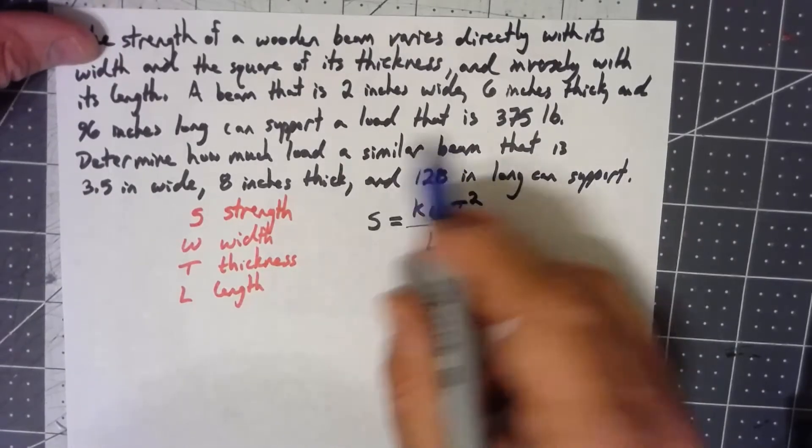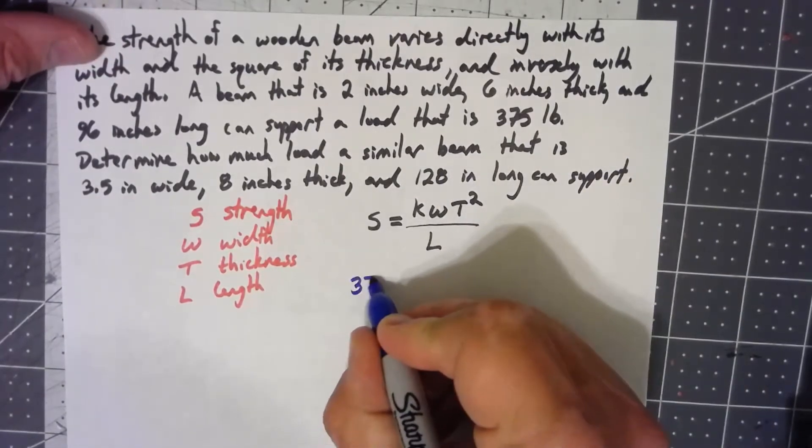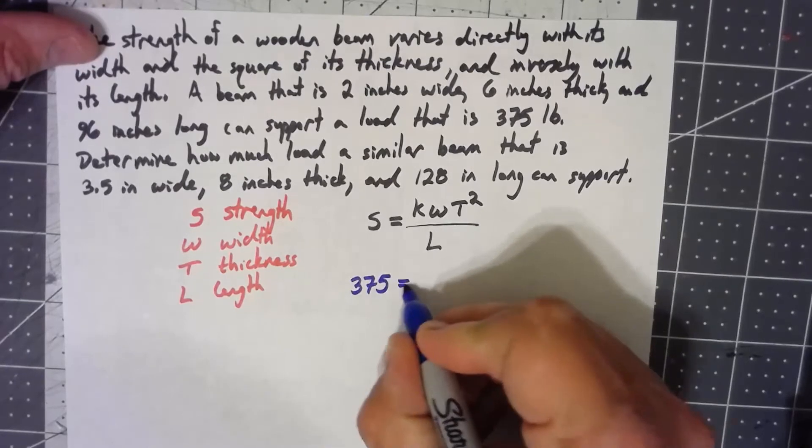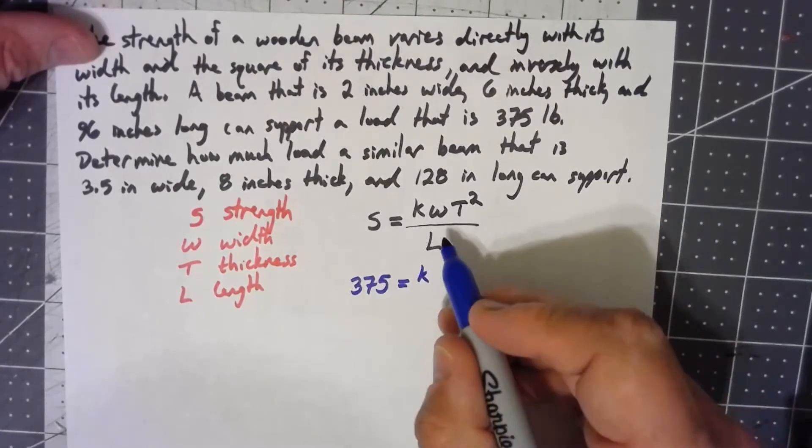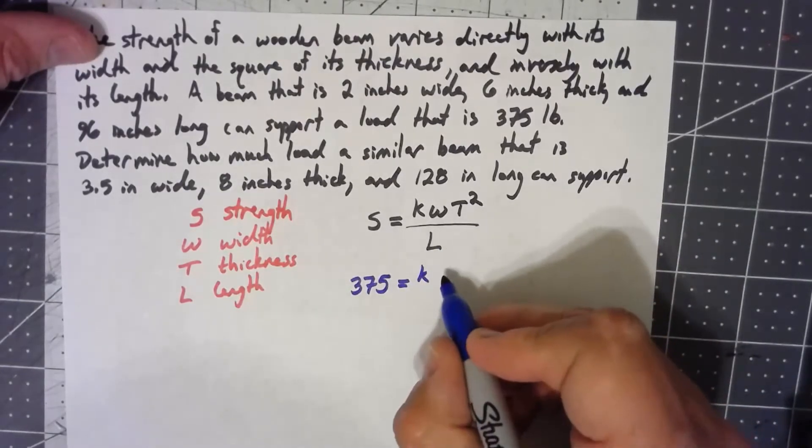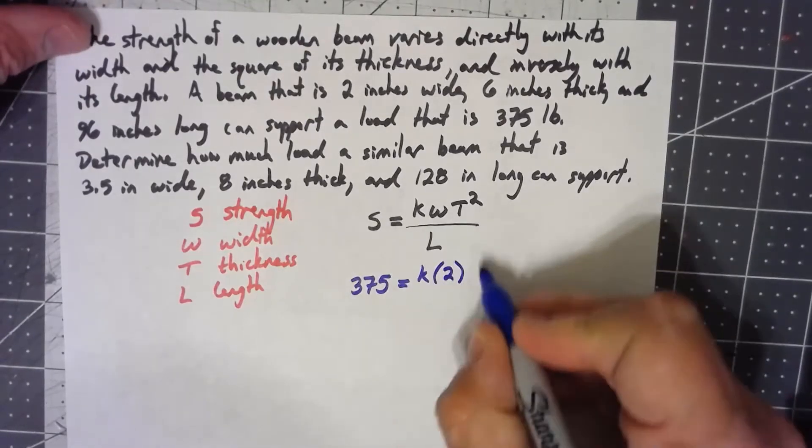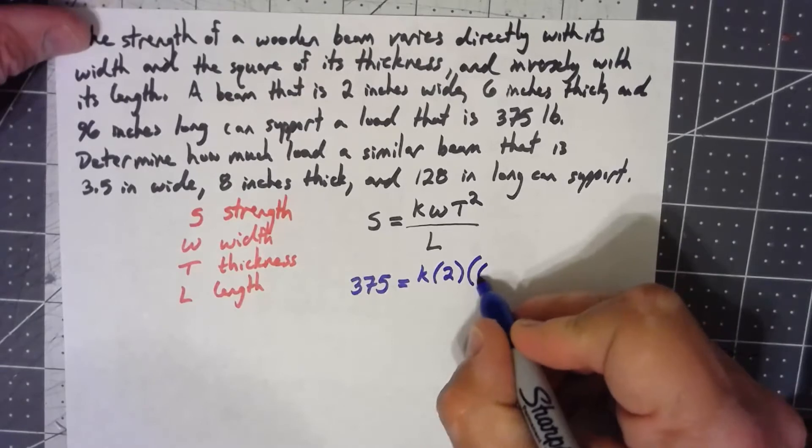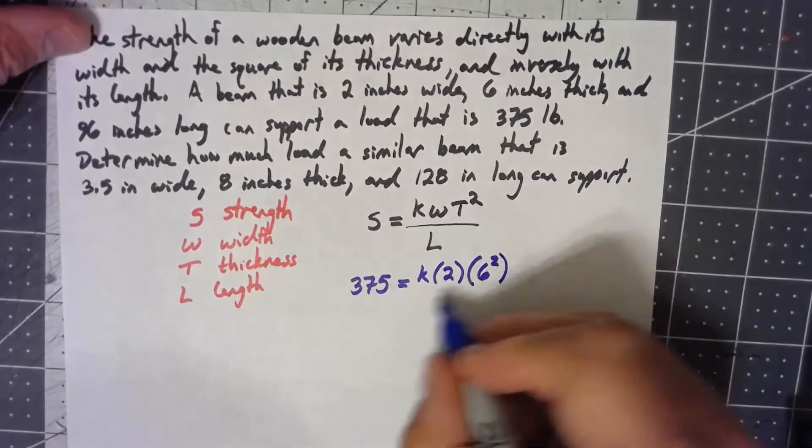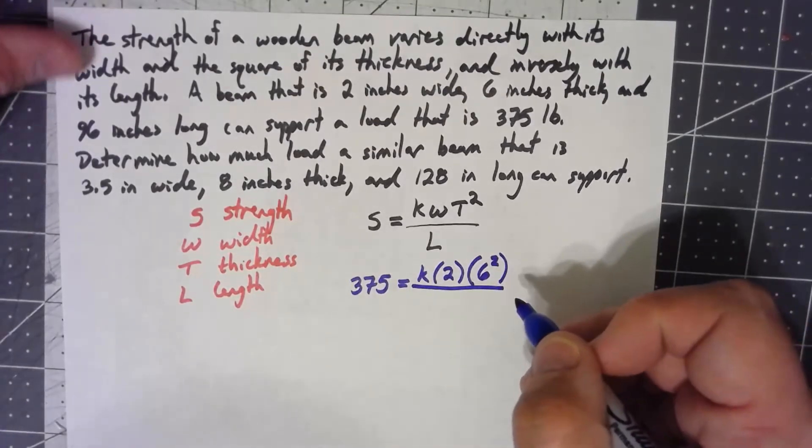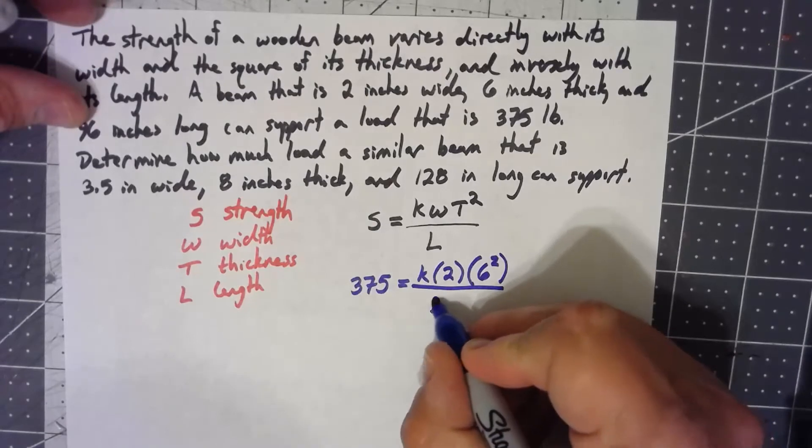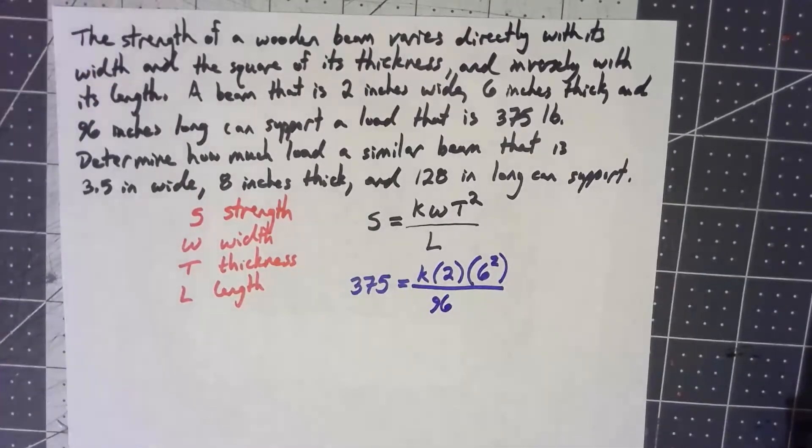The strength, it can support a load that's 375 pounds. I don't know what K is. I know the W is 2. The T is 6, but that has to be squared, and then divided by 96.